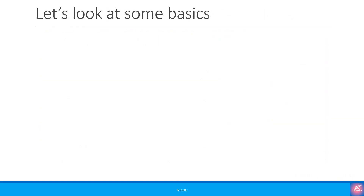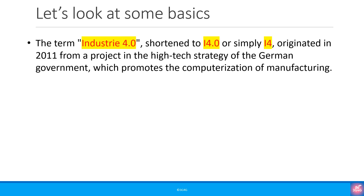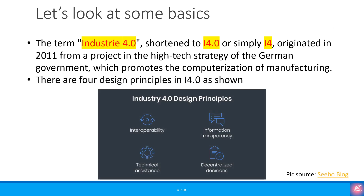Let's look at some basics before proceeding further. The term Industry 4.0, shortened to I4.0 or simply I4, originated in 2011 from a project in the high-tech strategy of the German government, which promotes the computerization of manufacturing. There are four design principles in Industry 4.0. These principles support companies in identifying and implementing 4.0 scenarios. Interconnection is the ability of machines, devices, sensors and people to connect and communicate with each other via the Internet of Things or the Internet of People.